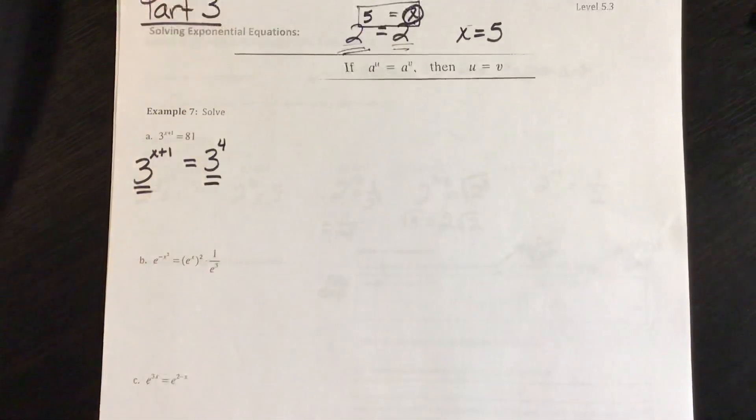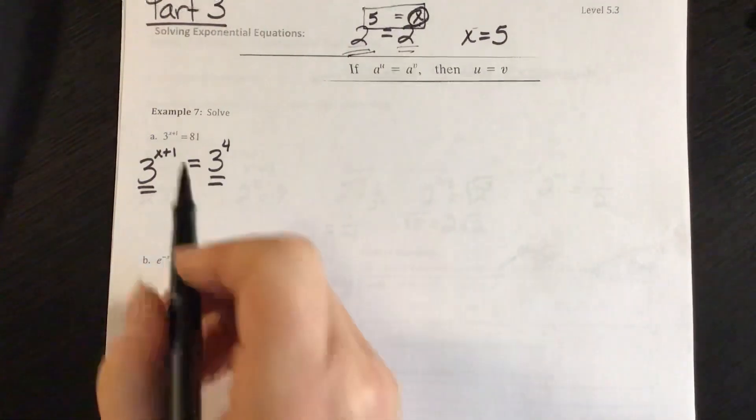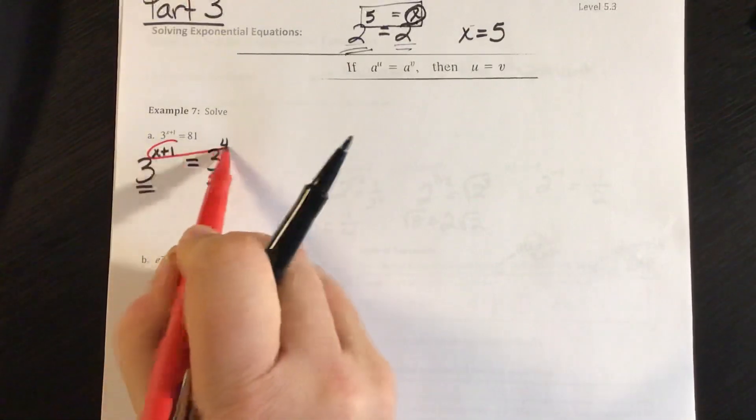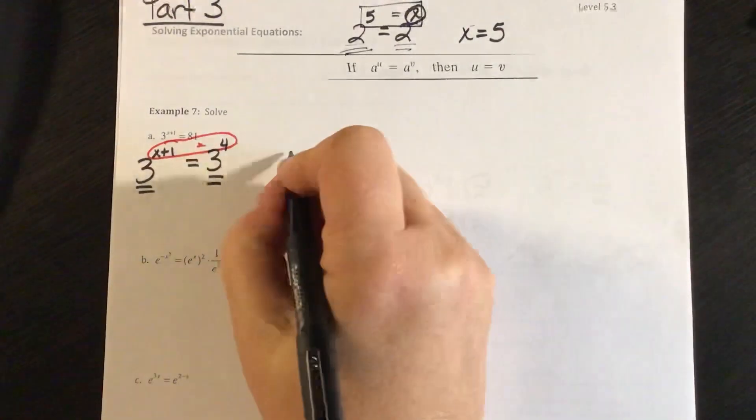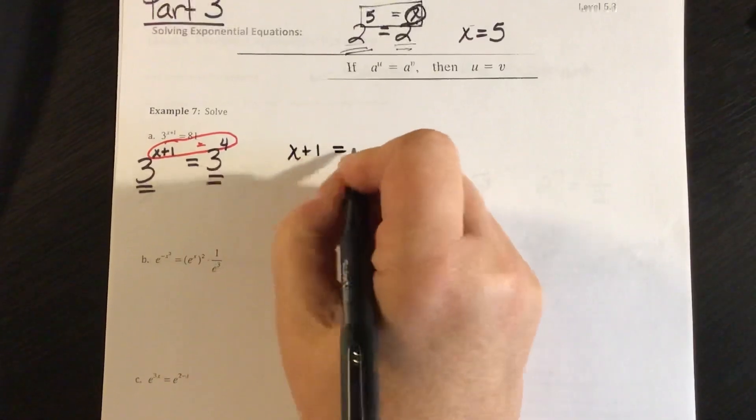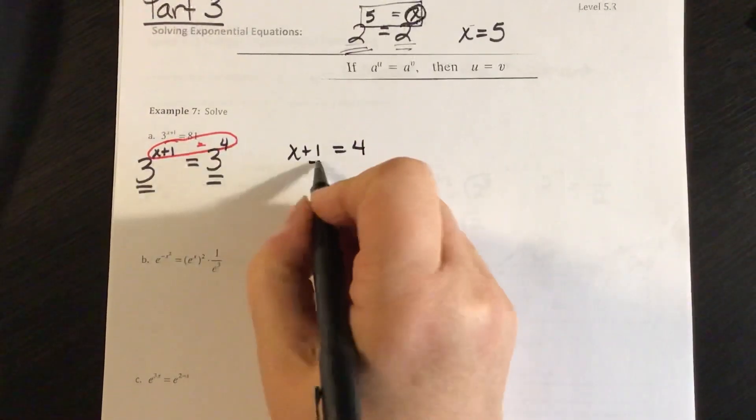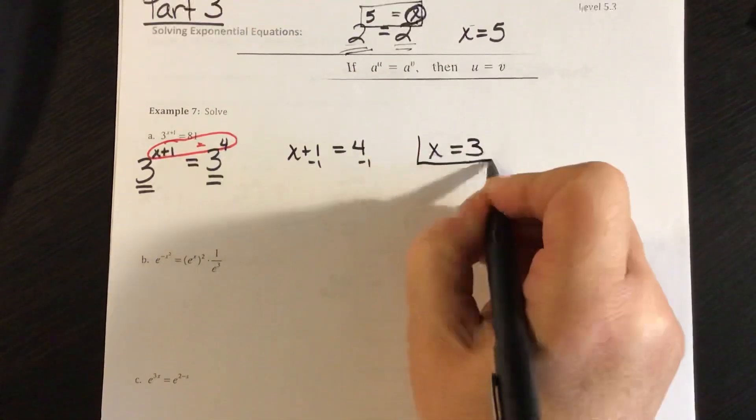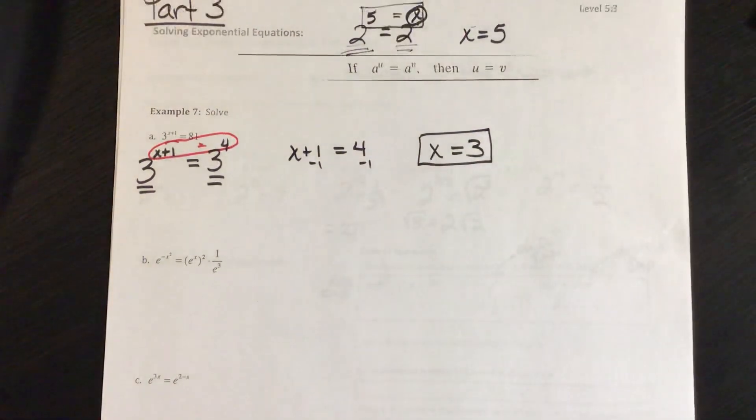So now, noticing that my bases are the same, my exponents now have to equal. So x plus 1 has to equal 4. Subtract 1 on both sides, and x is 3. So we're just finding the value of x that makes the equation true, and we're going to use some properties of exponents here.